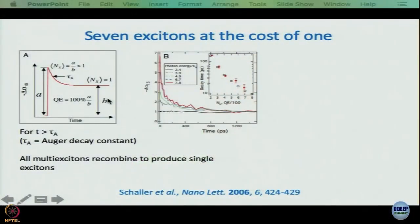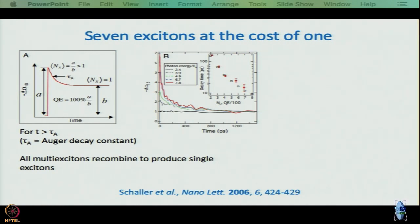Basically this one is B, so whatever we get from the y-intercept — where y is delta alpha — that is your efficiency, and multiplied by 100 gives the percent. This is how they arrive at 700 percent efficiency.